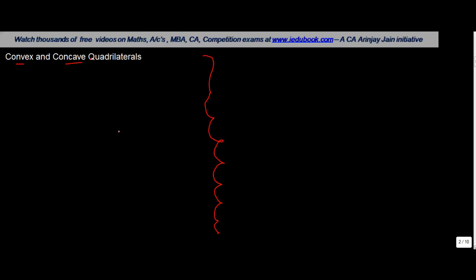What is the difference between convex and concave quadrilaterals? Well, the difference lies in the measure of angles. In a convex quadrilateral, each angle is less than 180 degrees.